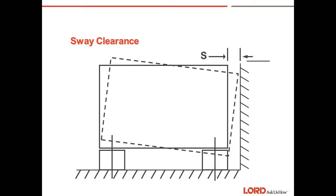Sway clearance: In any base-mounted system, we must determine what the sway clearance S is going to be at the point of maximum excursion. Note that the calculated dynamic displacement occurs at the isolator or mount and could be aggravated by the geometry of the package design in a base-mounted system. In some instances, the secondary collision of the package against the outside container wall may be worse than what initially caused the package to deflect.